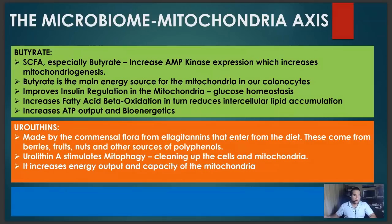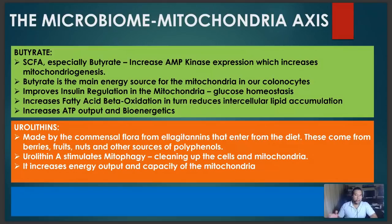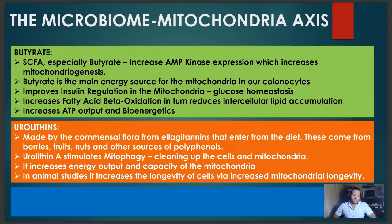Urolithin A allows for removal of dysfunctional mitochondria and replacement with good functional mitochondria, improving ATP output and the spare respiratory capacity, thereby providing more redox balance. In animal studies, urolithin A seems to increase the longevity of cells and mitochondria — cells incubated with urolithin A live much longer than those without. But remember, urolithin A has to be made by the microbiome — it is converted from other tannins and polyphenols, so you can't just buy a urolithin A supplement without a healthy microbiome to make it.